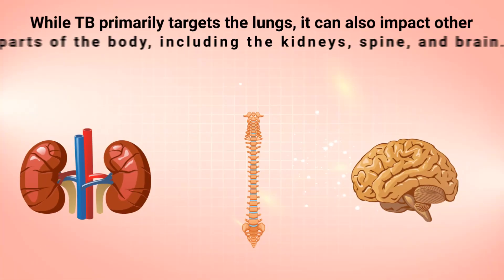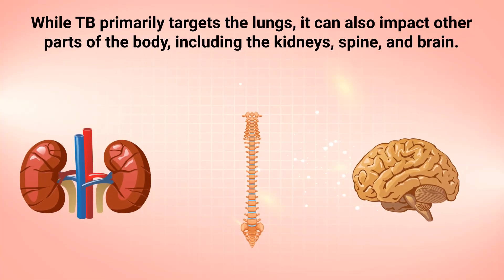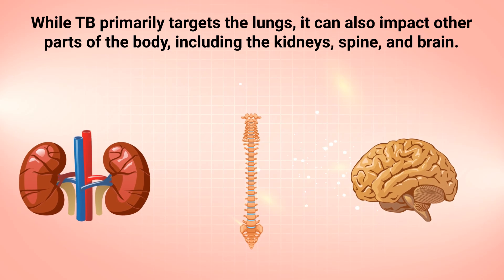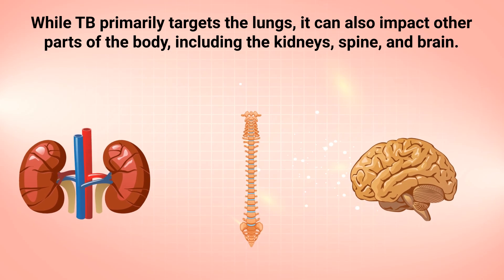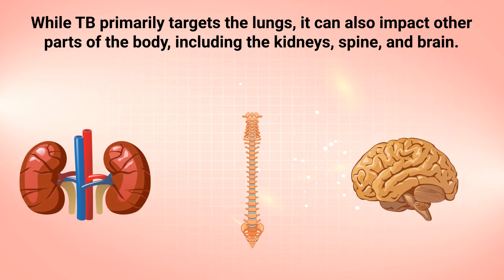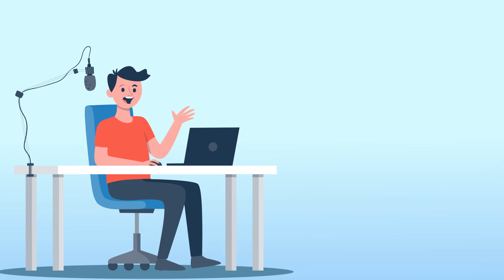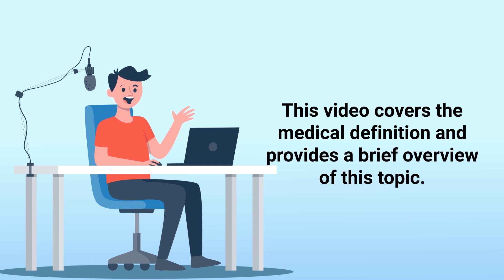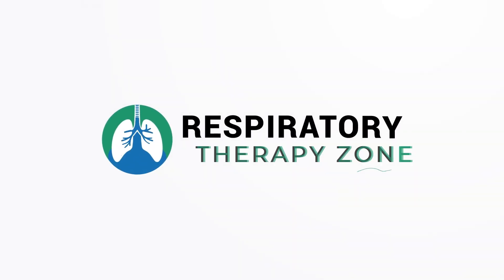While TB primarily targets the lungs, it can also impact other parts of the body, including the kidneys, spine, and brain. This video covers the medical definition and provides a brief overview of this topic. So if you're ready, let's get into it.